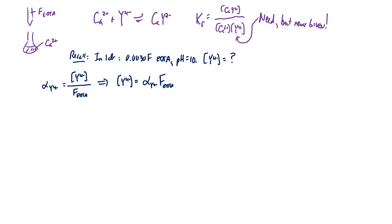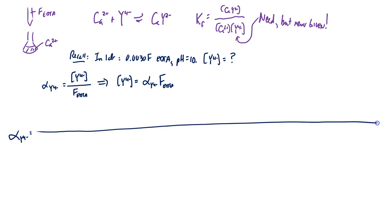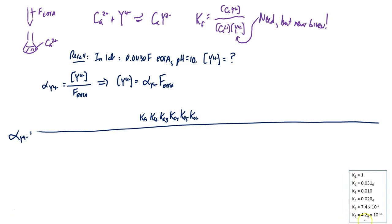It's an awful-looking equation, though. If you think back to the fraction of A²⁻, the fraction of Y⁴⁻ is going to be similar, but uglier. In the numerator, we'll have Ka1 × Ka2 × Ka3 × Ka4 × Ka5 × Ka6. What are these Ka's for? These are the Ka values for EDTA, which — don't forget — is a hexaprotic weak acid.